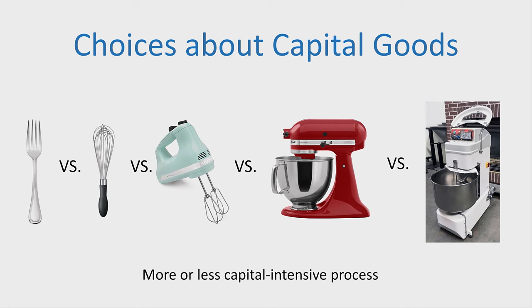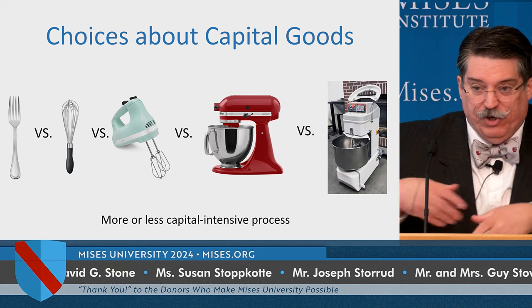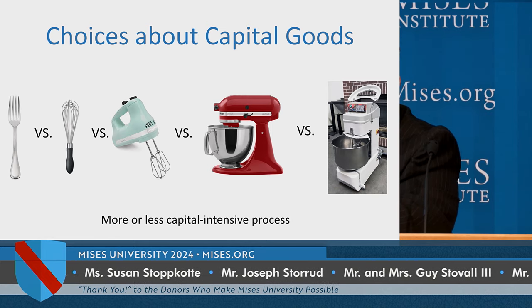People can make different choices about what kind of capital goods to accumulate. They can arrange production in a more or less capital-intensive process. To make a flourless chocolate cake, you could beat the eggs with just a fork, or use a handheld whisk, or a handheld mixer, or a stand-up mixer. The stand-up mixer almost doubles your productivity — you put the eight eggs in the bowl and turn it on, and while it mixes, you cut up the chocolate and butter and do the work of two people. The production process can be more or less capital-intensive, and that's going to be a decision made by the entrepreneur.